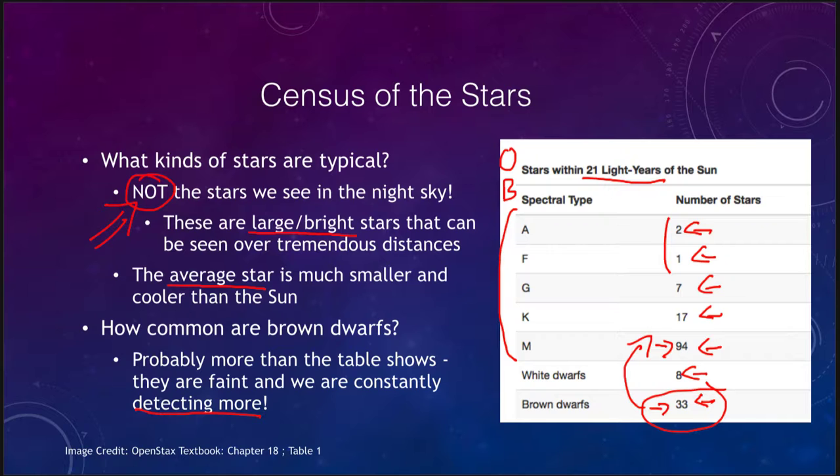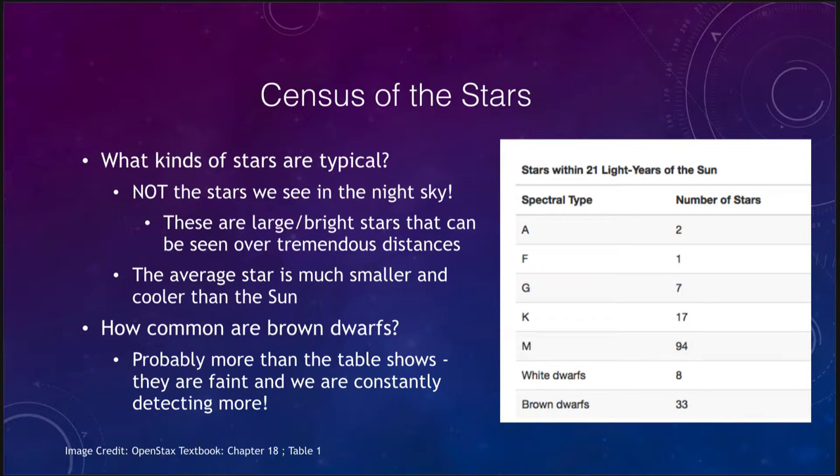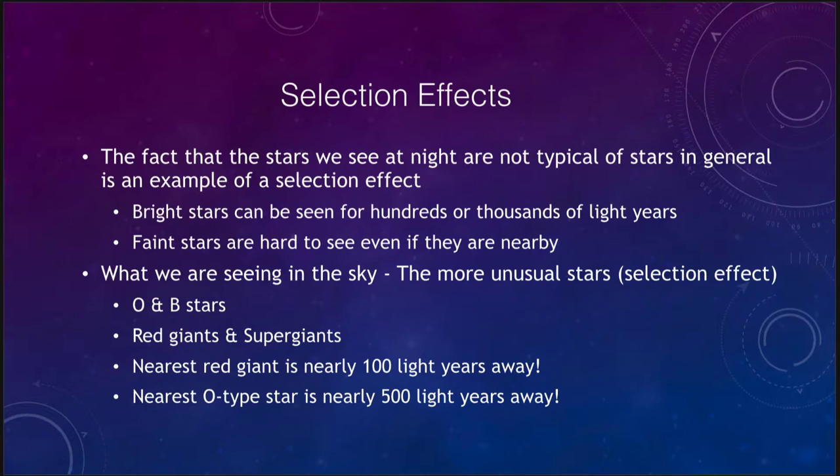Now, why do we see this? Why do we see, when we look out at the sky, all of these bright stars? But they are not typical. This is an example of what we call a selection effect. In astronomy, bright stars can be seen even if they are hundreds or thousands of light years away. Faint stars at the same distance would be almost invisible.